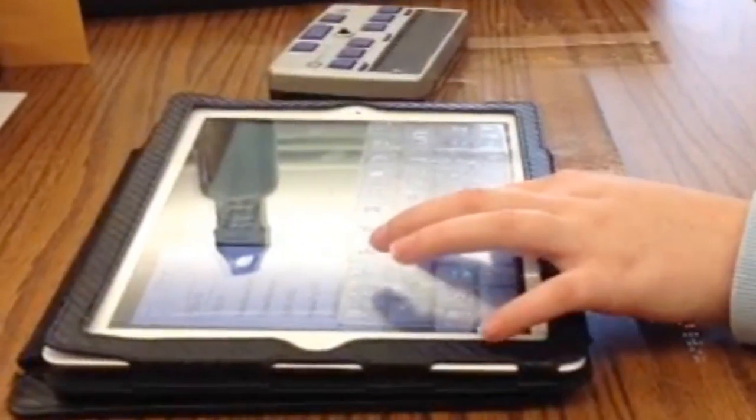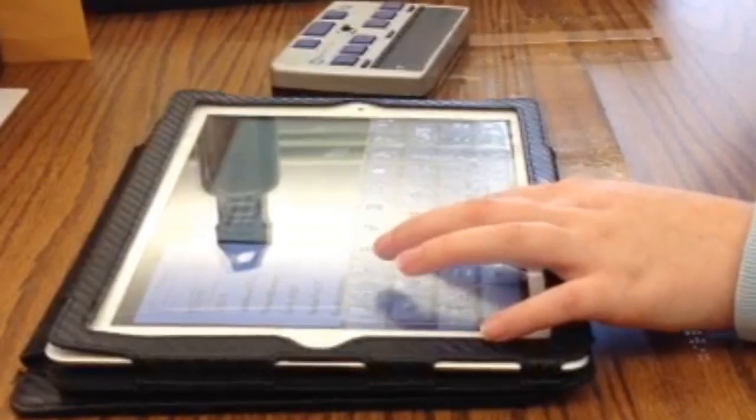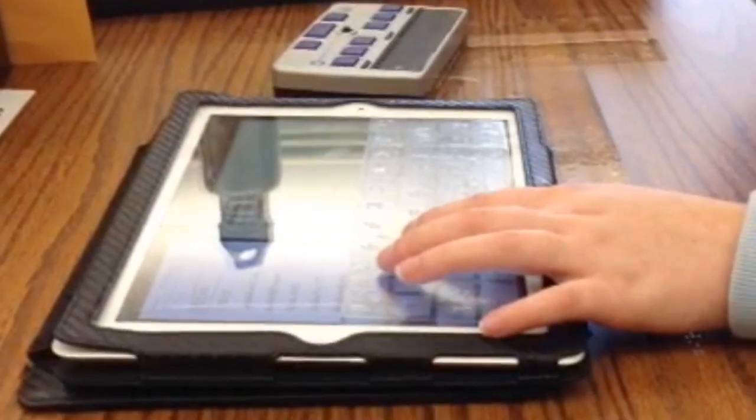Slide over and find the next one. F. Foxtrot. What letter? F. Very good.